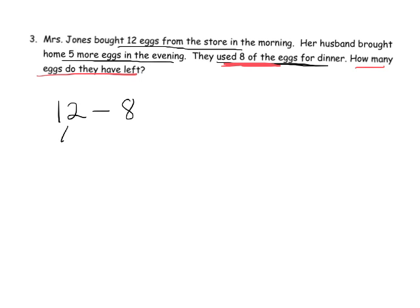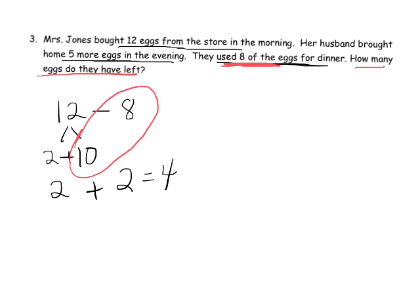And then I'm going to decompose this because of the ones. It says you have two ones, take away 8, so I'm going to decompose it so that we actually subtract the 8 from the 10, and that of course is 2, so we end up with 2 plus 2 which is 4.